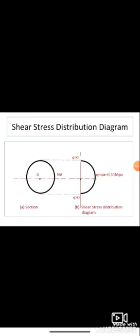This is the circular cross-section on the left side, and on the right is the shear stress distribution diagram. For the circular cross-section, the centroid is at the neutral axis. You can see the semi-circular curve representing the shear stress distribution. At the center, Q max equals 0.51 MPa, which is the maximum we calculated above. At the topmost and bottommost fibers, Q equals 0. This is how we draw the shear stress distribution diagram. Thank you students, that's all for today.